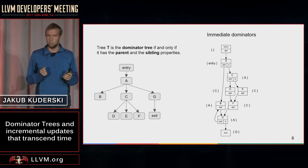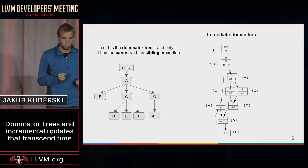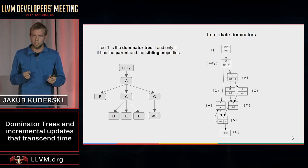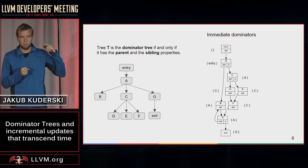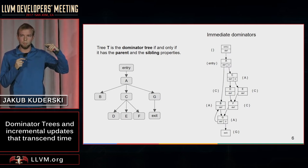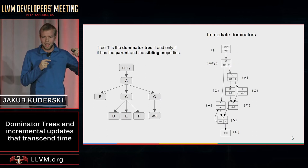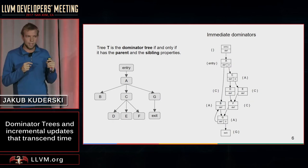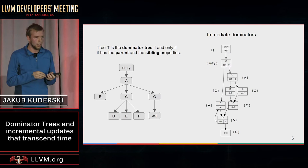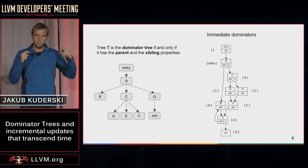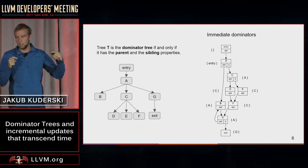Formally, a dominator tree is defined as any tree that has the parent and sibling properties. The parent property means that if one node is a parent in the tree and another is its child, then if we make the parent unreachable by deleting it from the CFG, the child must also become unreachable. The sibling property means that when two siblings share the same parent, removing one of them cannot make the other unreachable.